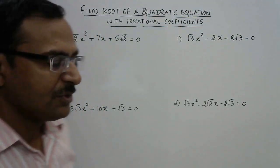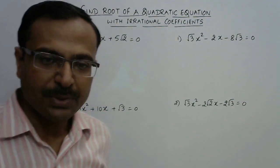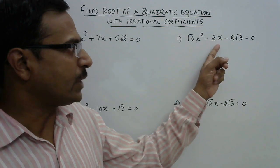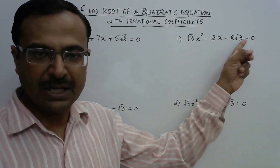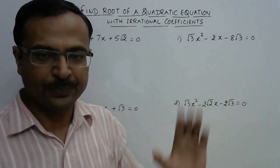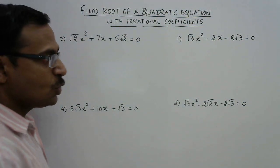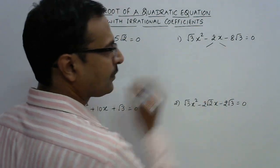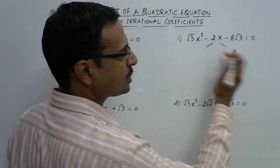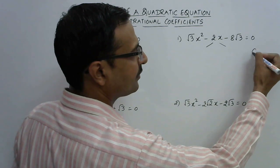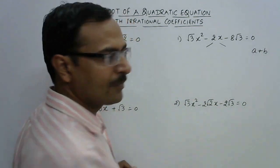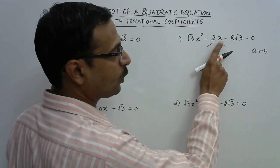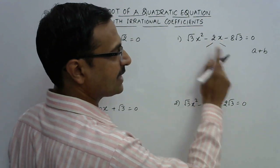The first question is √3x² - 2x - a√3 = 0. We need to split the middle term into two factors whose sum equals the coefficient of x, which is -2.